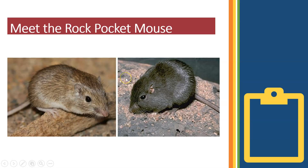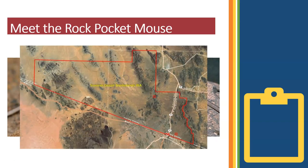There are also two major colors of substrate — that's a fancy word for desert surface, the surface that makes up the desert floor. Most of the desert surface consists of light colored sand and rock, but there are patches of dark volcanic rock that have formed from lava flows, separated by kilometers of light colored substrate.